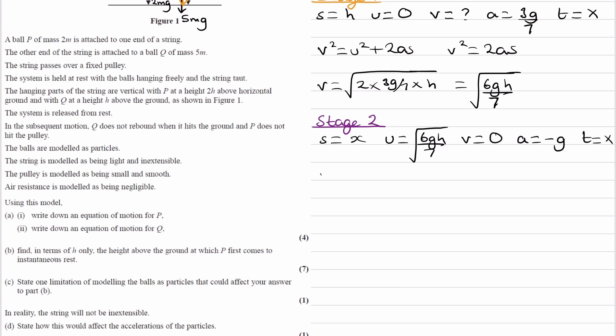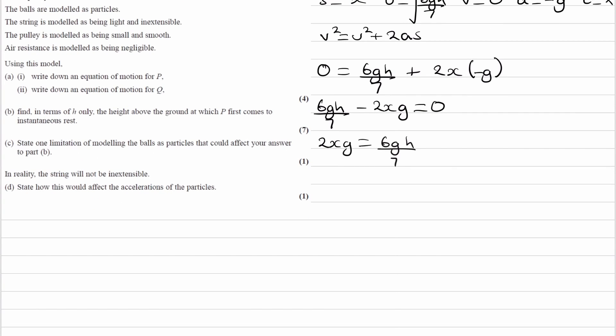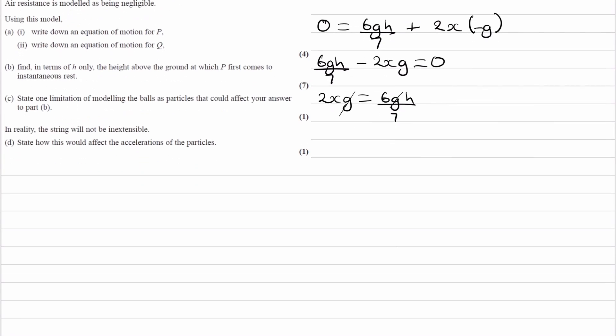So using these four quantities, the same equation, V squared is equal to U squared plus 2AS. We can use this to work out what X is. Let's put everything in. So we end up with zero is equal to U squared. U squared is this squared, so that just gets rid of the square root. 6GH all over 7 plus 2AS, so it would be 2X times minus G. So this is the same thing as 6GH over 7 minus 2XG is equal to zero. I'll bring the 2XG to the other side. I can cancel out the Gs, and I can divide by 2. So X then becomes, so divide this by 2, the 2 goes to the bottom. 6H over 14, and that's the same thing as 3H over 7.